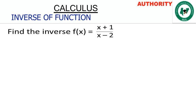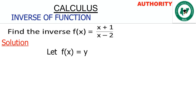In that tutorial, I stipulated some steps that are very important for solving inverse of a function — please watch that for those steps. Now let's go. We have f(x) equal to x plus 1 all over x minus 2. We let f(x) equal to y, so we have y is equal to x plus 1 all over x minus 2.